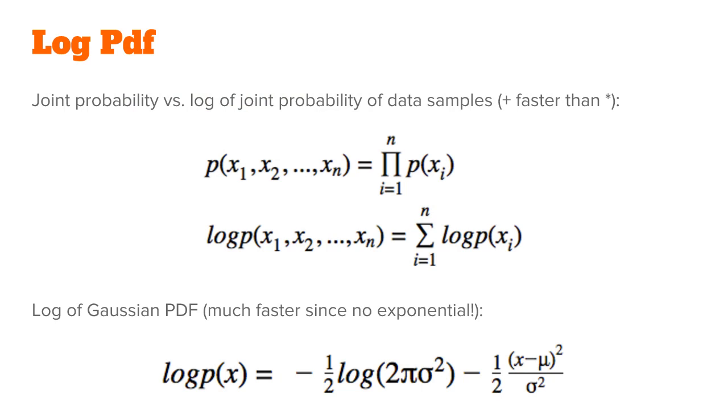A common calculation we need is not exactly the PDF, but the log of the PDF. When you want to calculate the joint probability of some samples of data, you need to multiply them together. But if you calculate the joint log probability, then you can add all the individual log probabilities together.